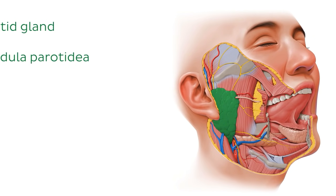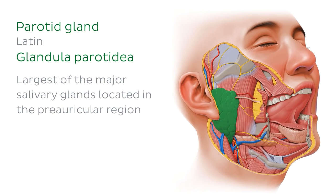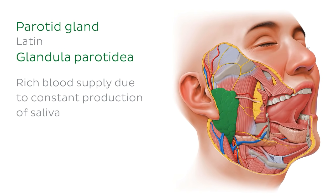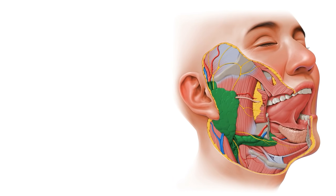On to the final major salivary gland, and one of the most popular: the parotid gland, which you can see highlighted here on the picture. The parotid gland is the largest of the major salivary glands. It is located in front of your ear, in a place known as the pre-auricular region. The parotid gland has a rich blood supply due to its constant saliva production, especially during mealtimes. The parotid gland also has an irregular-shaped parotid bed, or nest, which describes the structure surrounding and touching the parotid gland — seen here highlighted in green.